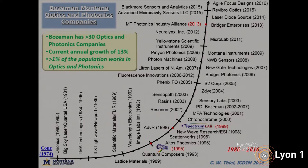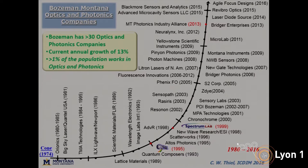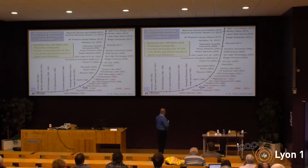Bozeman is a very unusual place, and that leads directly into the work that we do. Over the years, even though Bozeman is a very small town of only about 40,000 people in the city and the surrounding area, we have an unusually large number of optics communities. Per capita, we probably have the largest optics community in the United States.